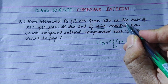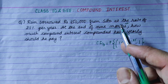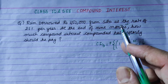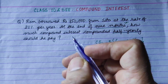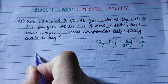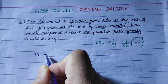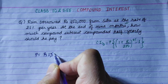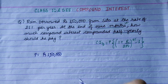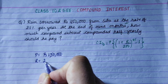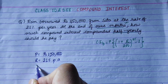But here there is a difference — we are given nine months, not a full number of half-year periods. So let's first note the given values: Principal = Rs. 1,50,000, Rate = 21% per annum, Time = 9 months.